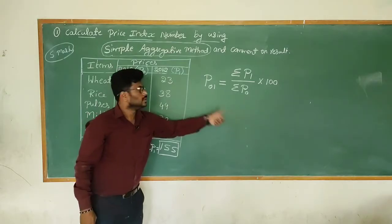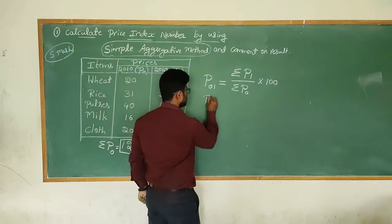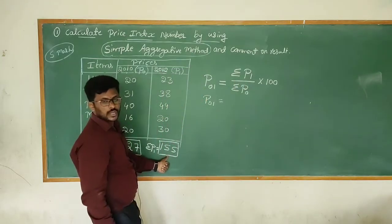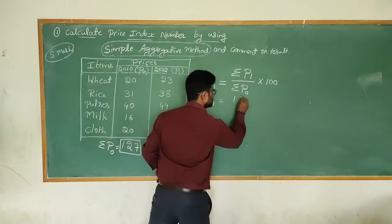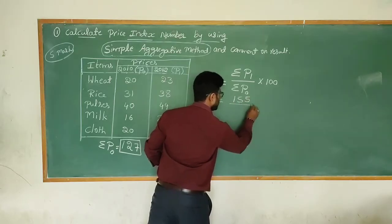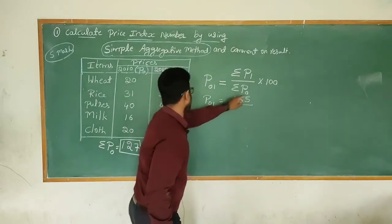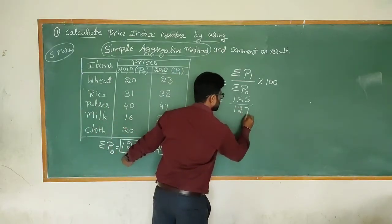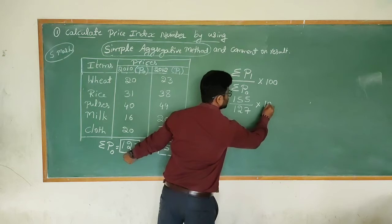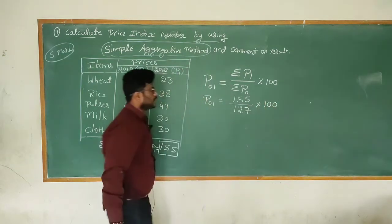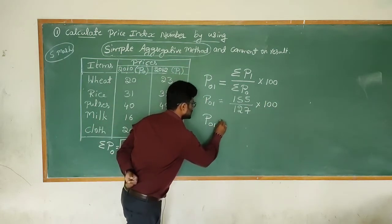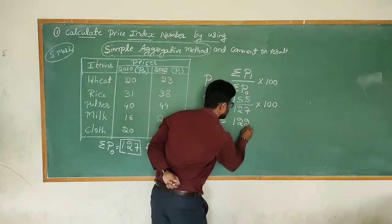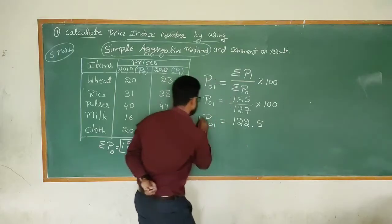Now we apply the formula. P₀₁ equals summation of P₁, which is 155, divided by summation of P₀, which is 127, multiplied by 100. Solving this gives us a final answer of 122.5.